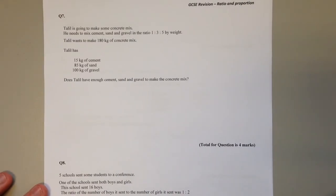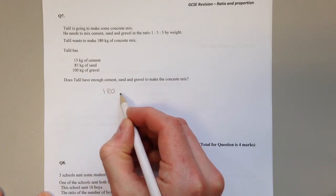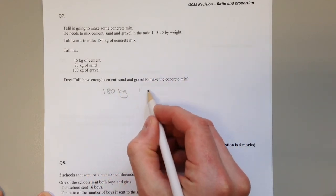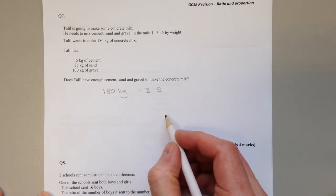Question 7. To mix concrete we need cement, sand, and gravel in the ratio 1 to 3 to 5. We want to make 180 kilograms of concrete. And those are the ingredients we have. Do we have enough? Well, in order to make 180 kilograms, let's share the 180 kilograms in the ratio 1 to 3 to 5 and see how much of each we need. Same steps: